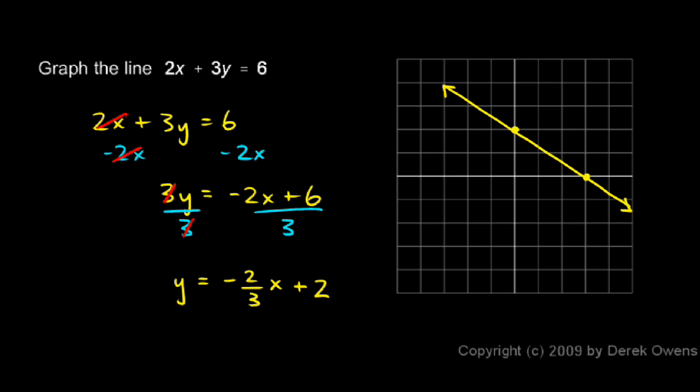But the problem is it can't be used to represent every single line. Specifically, you can't write a vertical line in this form, because a vertical line doesn't have a slope. The slope is undefined, or you could think of it as being infinitely steep. We don't have a number we can put in there for the slope. So because we can't represent every single line with it, the y equals mx plus b form is not considered the standard form. We need this other form, ax plus by equals c, in order to be able to represent any line.